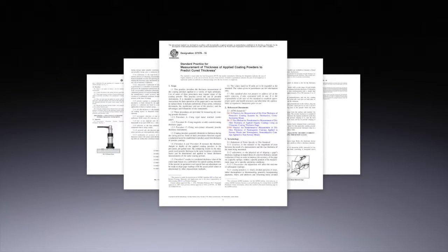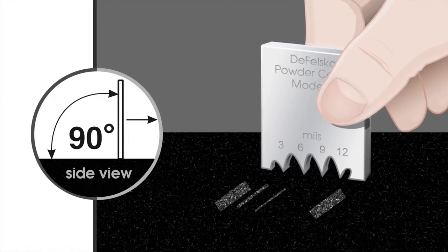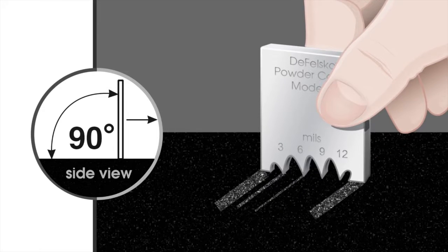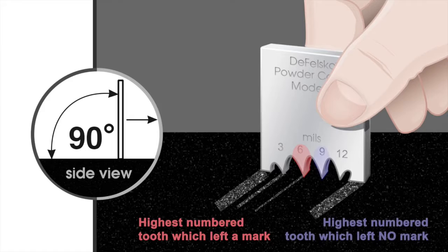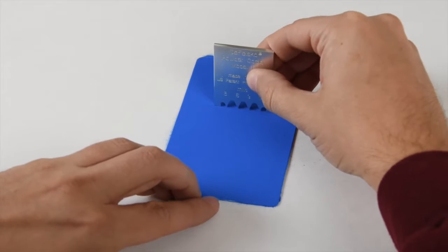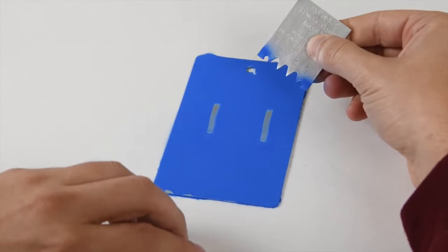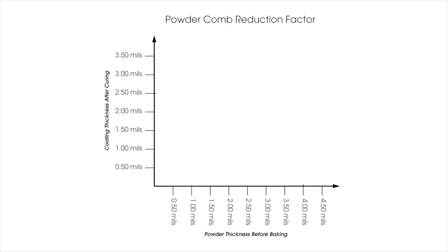ASTM D7378 describes methods including powder combs and ultrasonic instruments. The powder comb consists of several teeth offset at different heights. It is dragged across the surface and the powder height is determined by observing the highest numbered tooth which made a mark and the next highest tooth which left no mark. While the powder comb is easy to use and inexpensive, it requires a relatively large flat area to measure and will leave marks in the powder. Since the powder shrinks during curing, readings from the powder comb must be corrected using a reduction factor. Given these limitations, many applicators require a better solution.